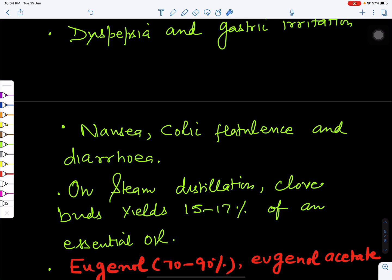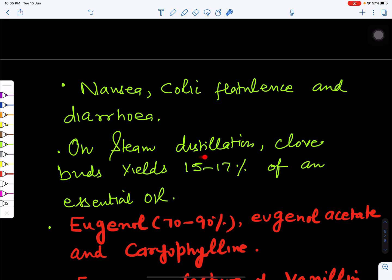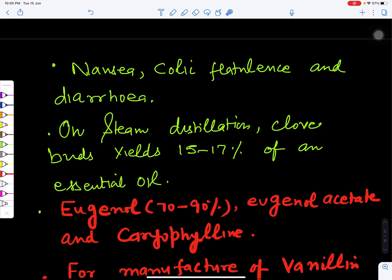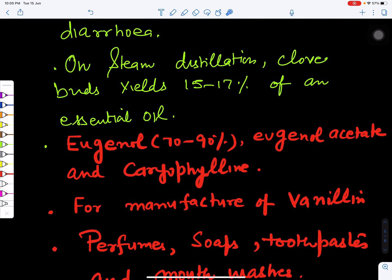When we steam distillate the floral buds, we can yield an oil called clove oil. This is rich in eugenol 70 to 90 percent. This is also having eugenol acetate and caryophyllene.